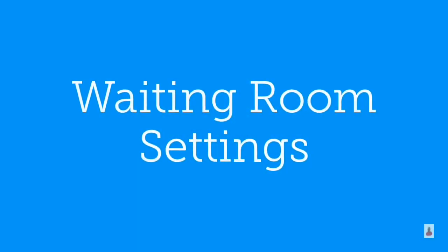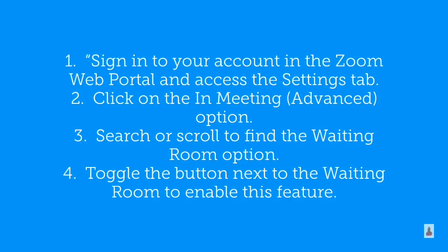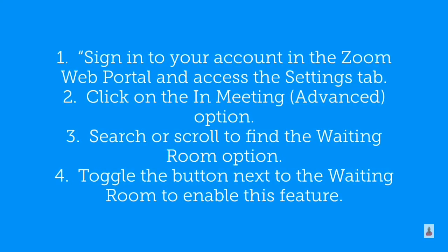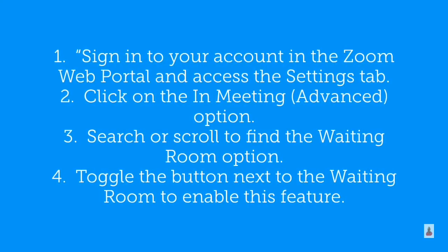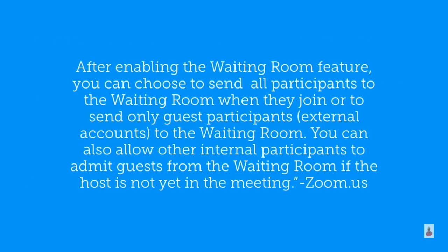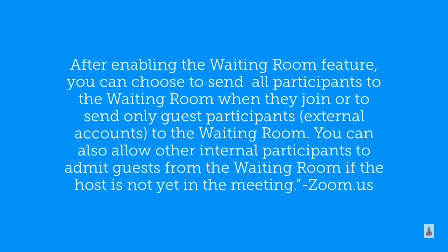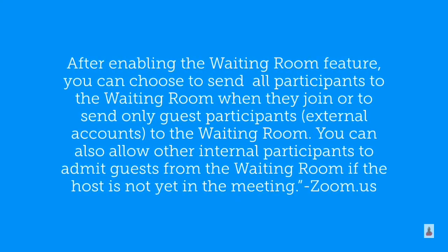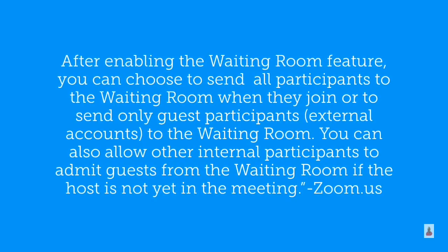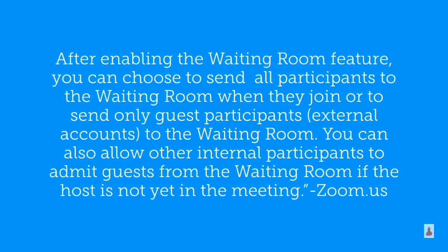Waiting room settings. First, sign into your account in the Zoom web portal and access the settings tab. Click on the in-meeting advanced option. Search or scroll to find the waiting room option. Toggle the button next to waiting room to enable this feature.